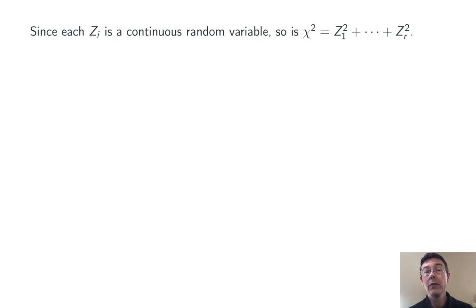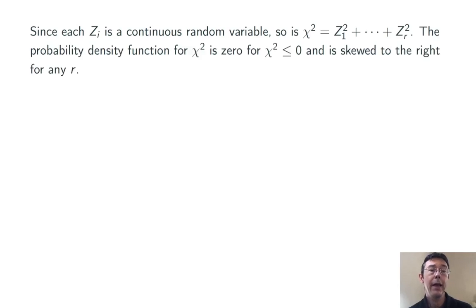Since each of the z's are continuous random variables, so is chi-squared, and we can make a couple of immediate observations. Chi-squared is going to have a PDF that's going to be zero for chi-squared less than or equal to zero, because of course chi-squared can never be negative. And the distribution of chi-squared is going to be skewed to the right regardless of r.